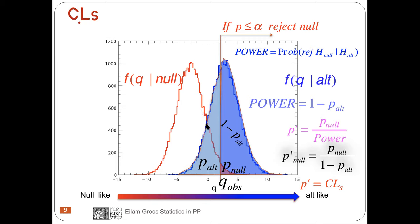The red distribution is the PDF under the null hypothesis. Values to one side are null-hypothesis-like and to the other side are alternative-like. The probability to get a result which is more alternative-like than the one we observe, under the null hypothesis, is the red area — this is called the p-value, or p-null. It is always defined with respect to the null hypothesis which you try to reject.